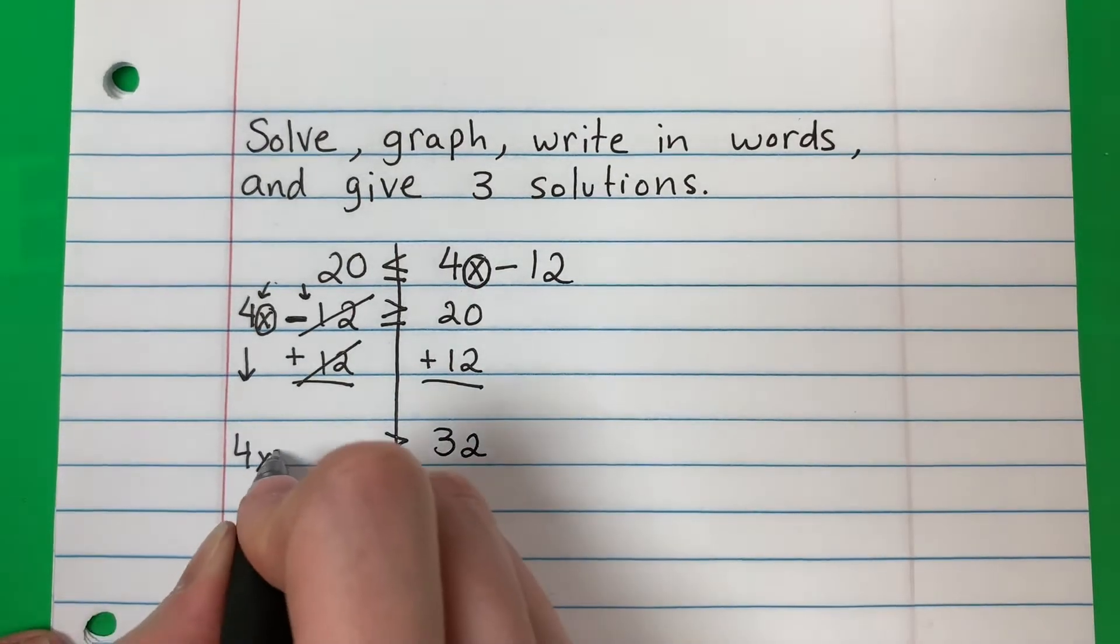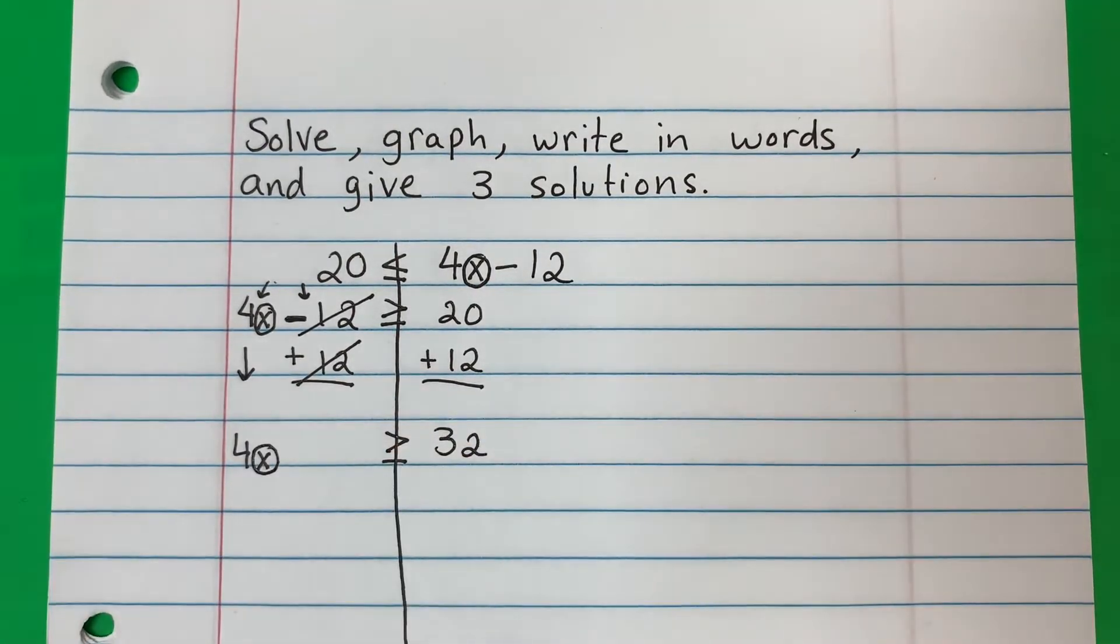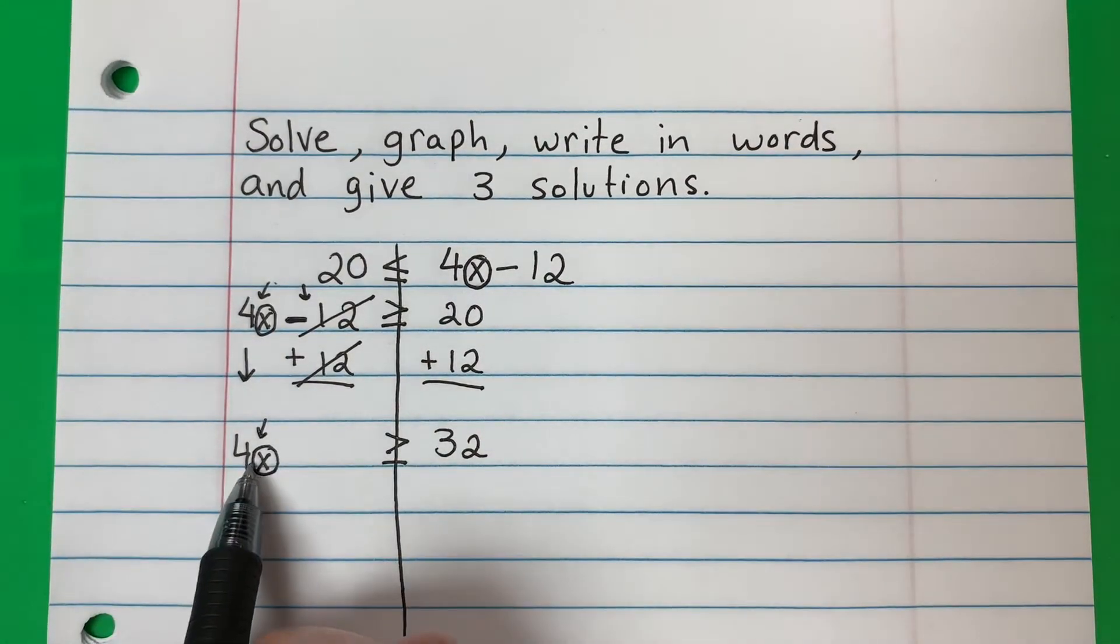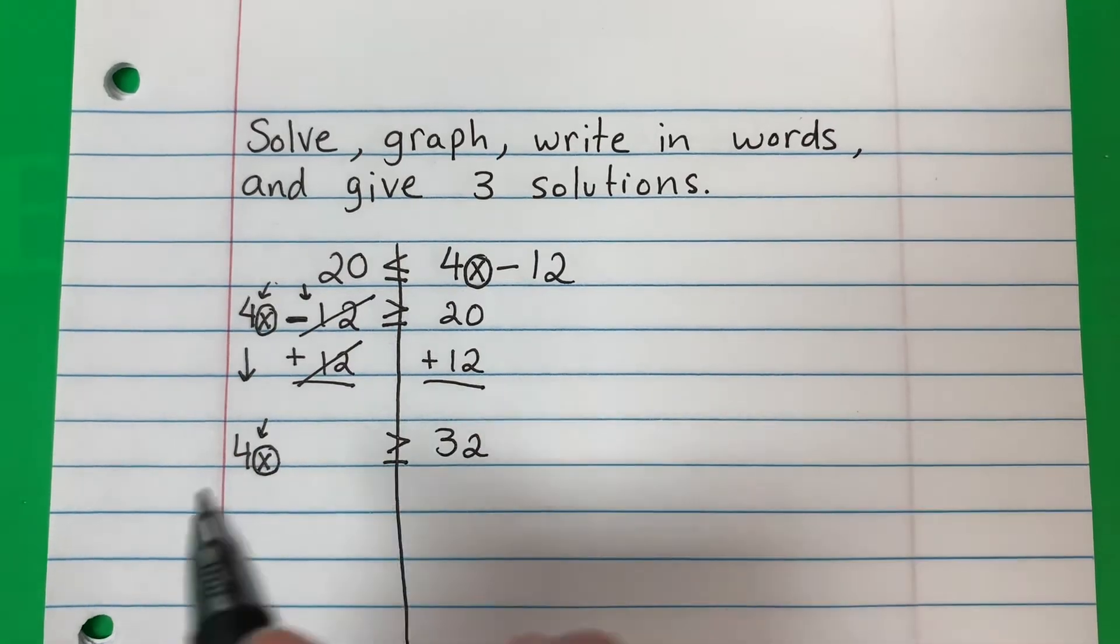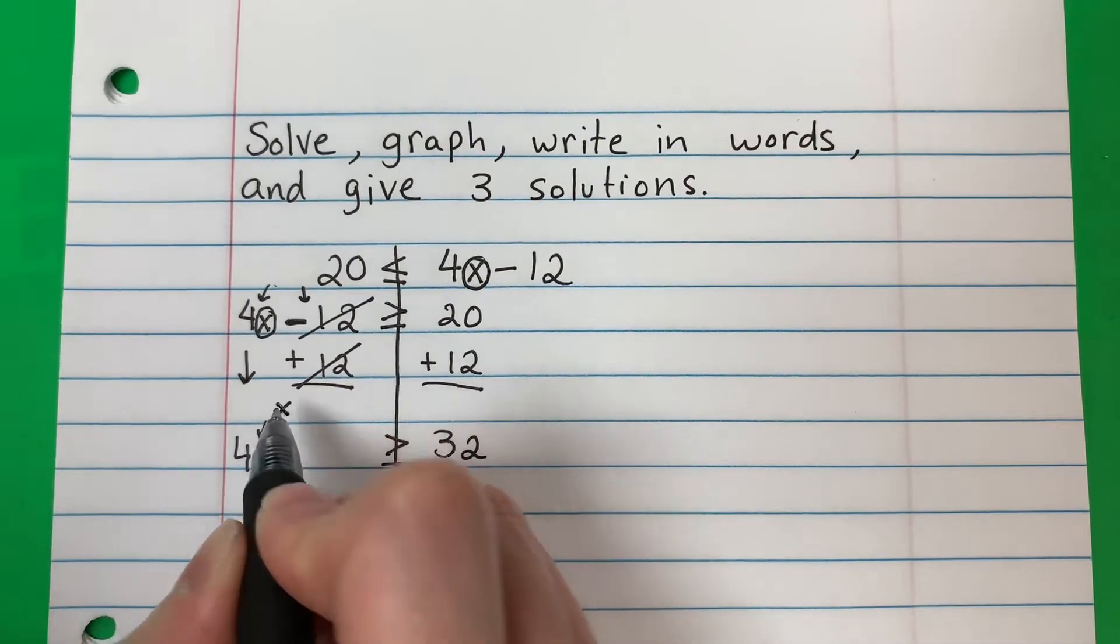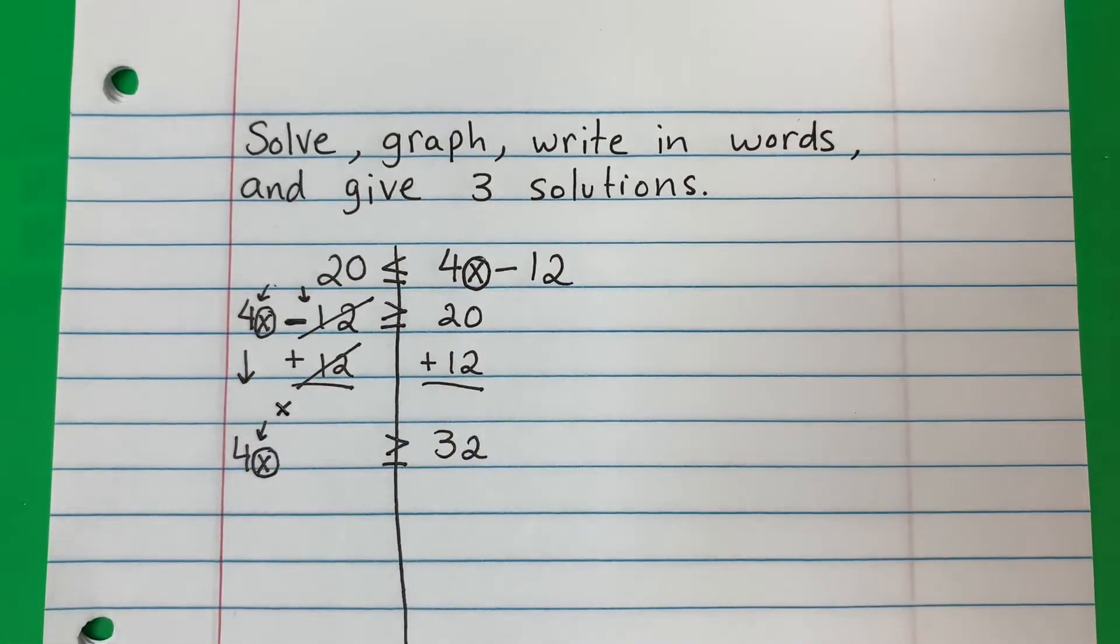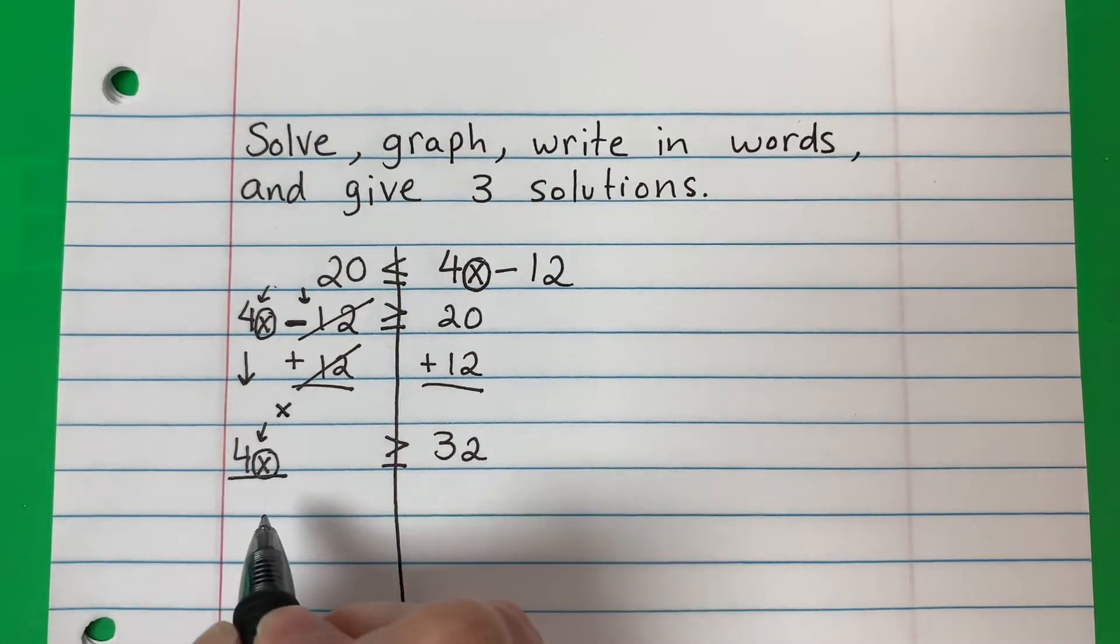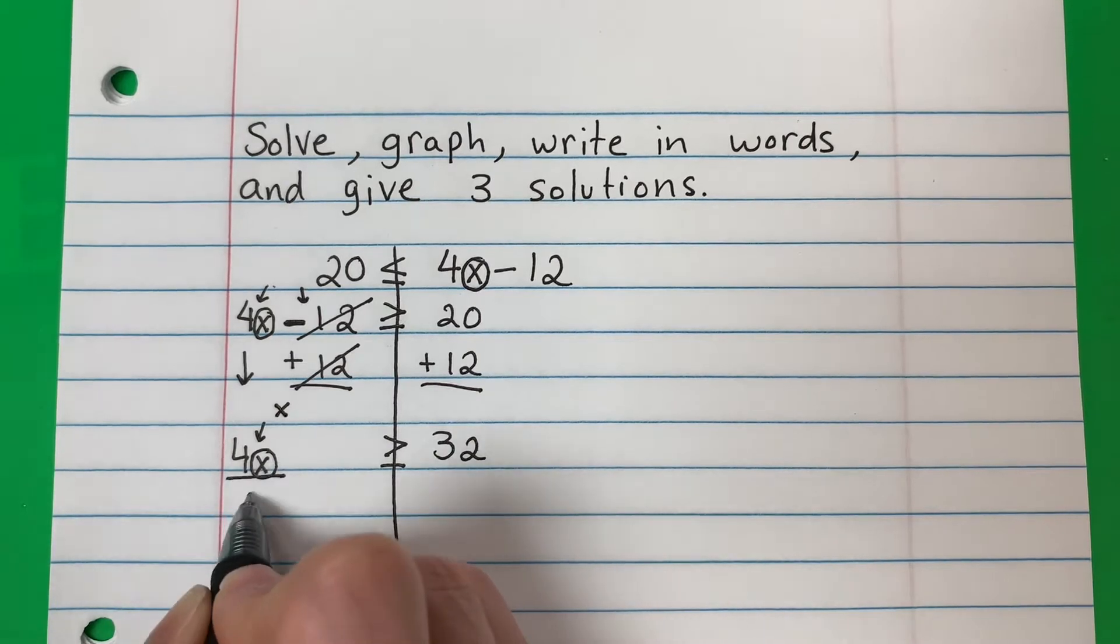Okay, I want X alone. What is with X? 4. And they are touching. That is multiply. The opposite of multiply, divide. Okay, what number is with X? 4. Copy 4.